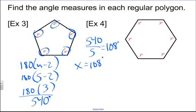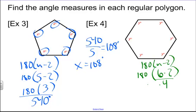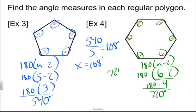For number 4, it has 6 sides. Using 180 times (n minus 2): 180 times (6 minus 2) equals 180 times 4, which is 720 degrees total. There are 6 angles, so divide 720 by 6. Each angle is 120 degrees, so y equals 120 degrees.